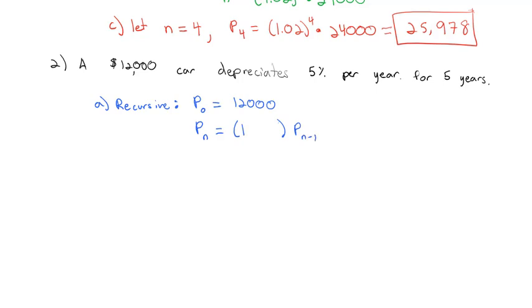The common ratio is 1 plus the rate. But the car is depreciating, which means the car goes down in value, so it's going to actually be negative: negative 0.05. Or if we do that subtraction, P sub n is 1 minus 0.05, which is 0.95, times the previous term P sub n minus 1.